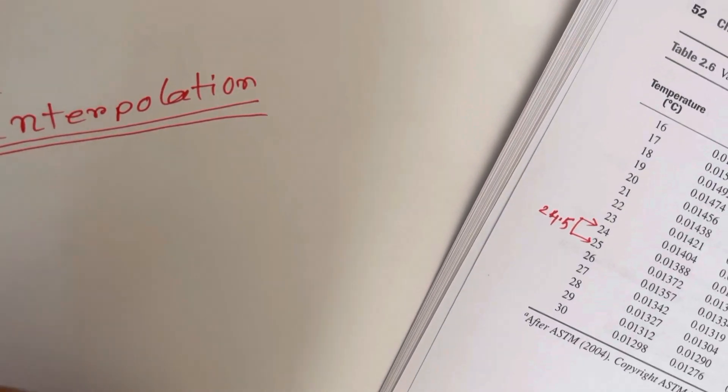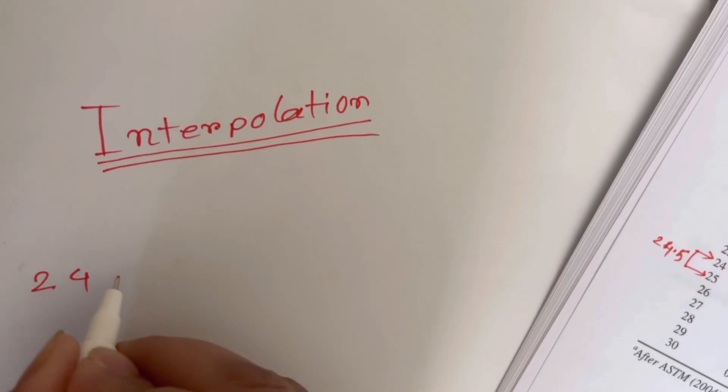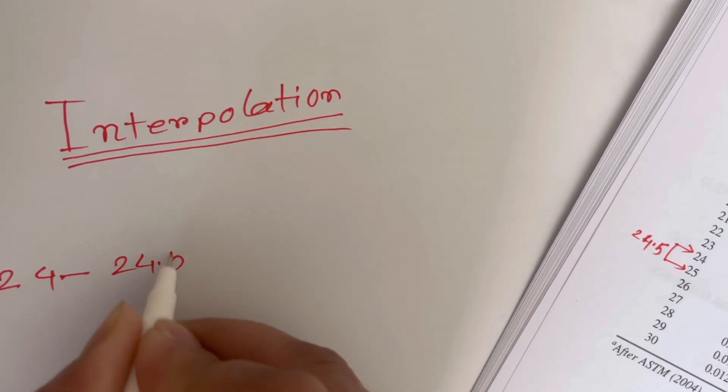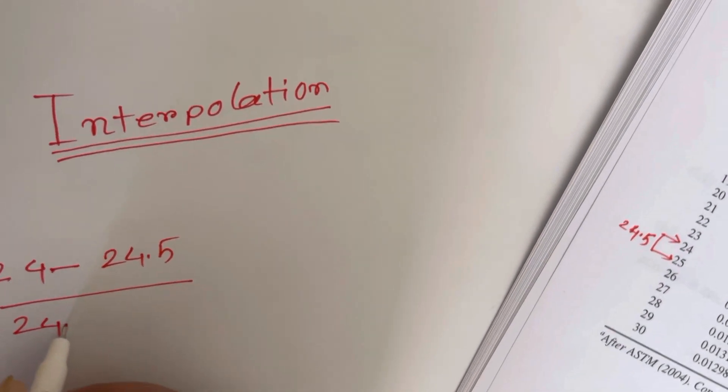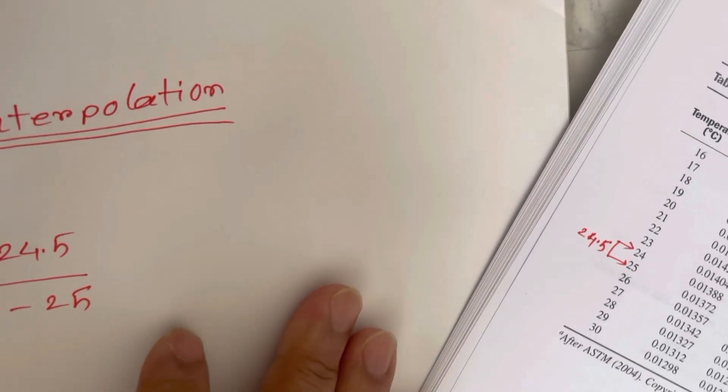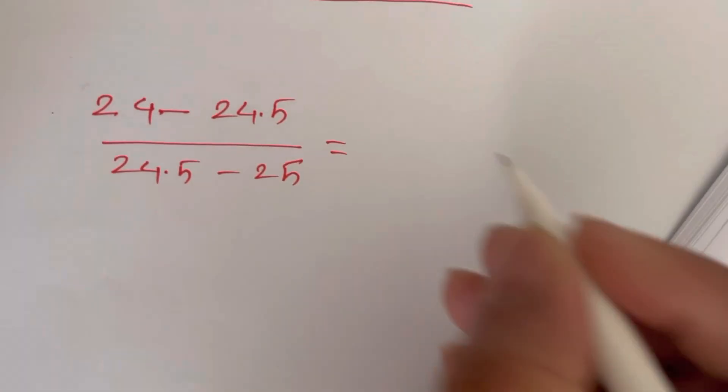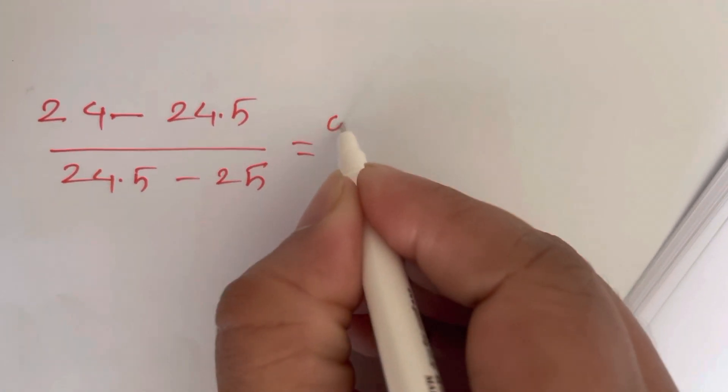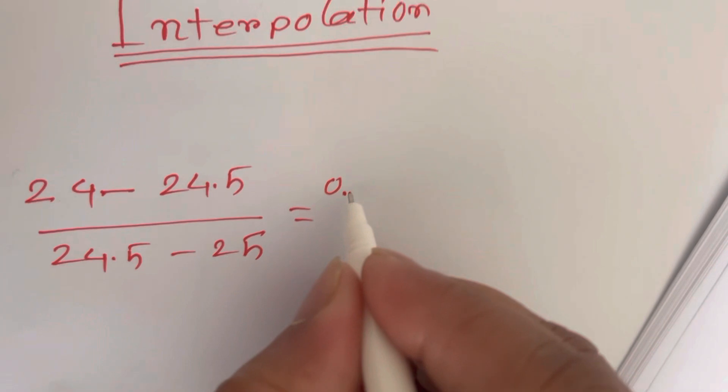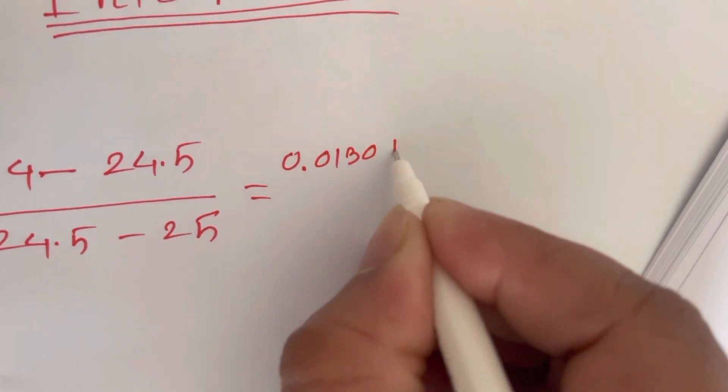24 minus 24.5, and 24.5 minus 25. And then you have to go to the equals. The corresponding value is 0.01301 for 24.